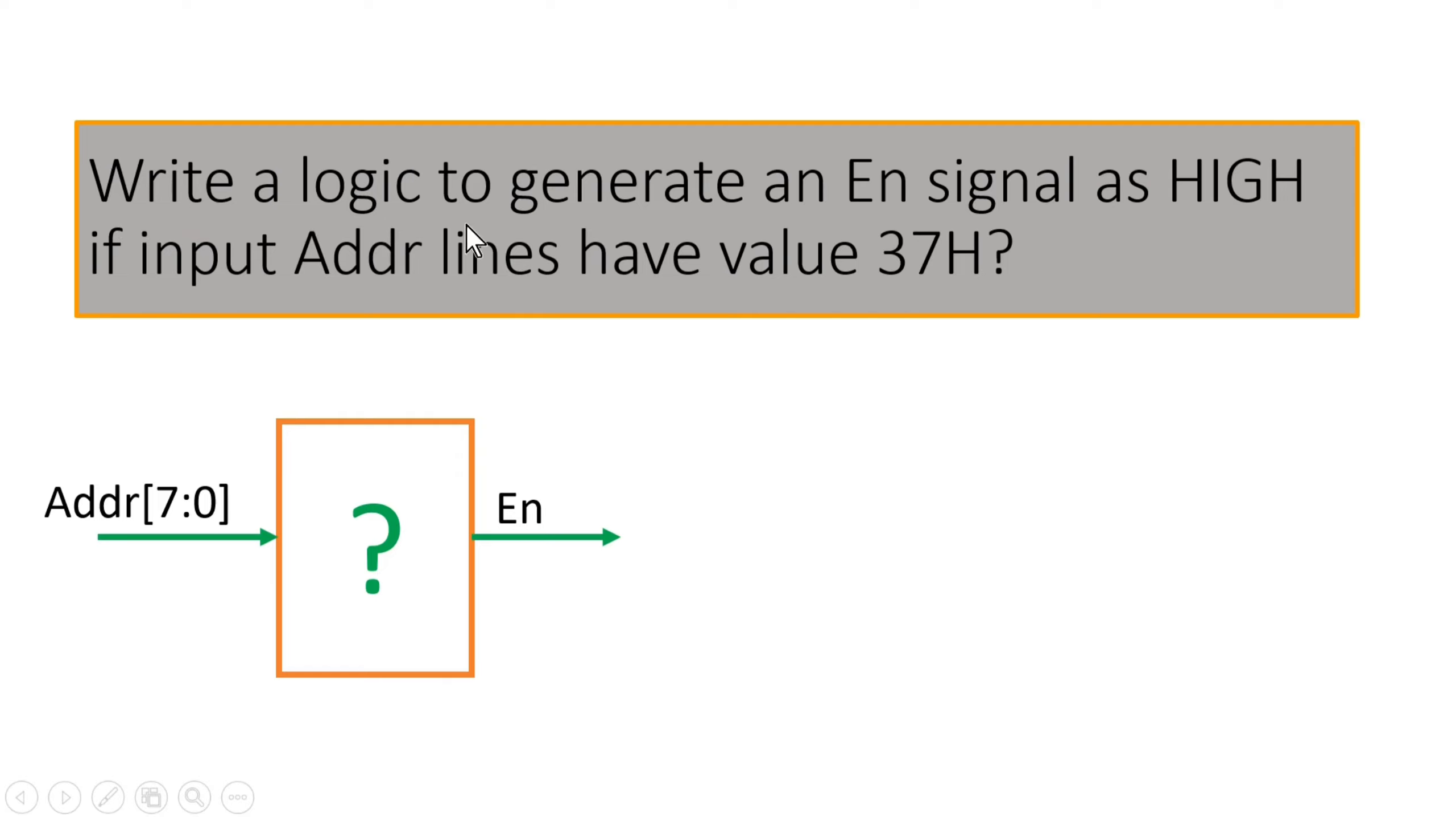You have to design a logic to generate an enable signal as HIGH if input address lines have value 37H. Friends, you have to fill this black box, and the functionality of this black box is